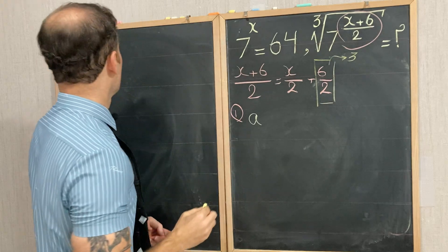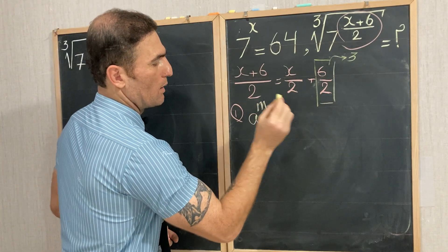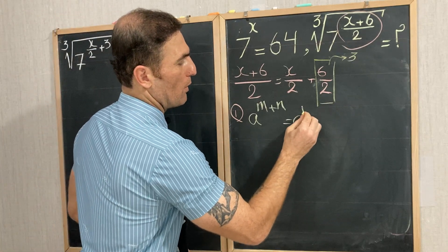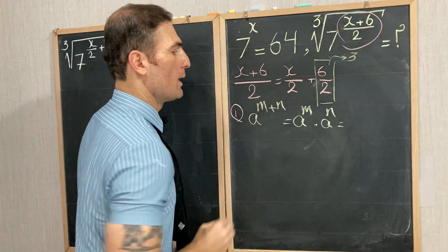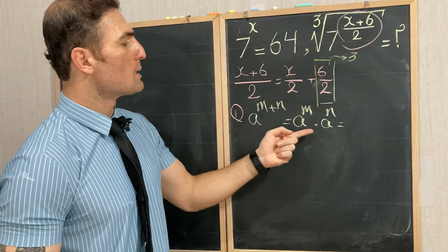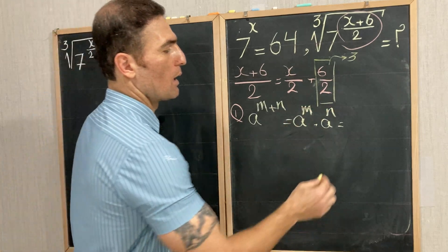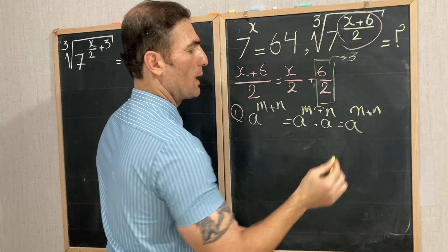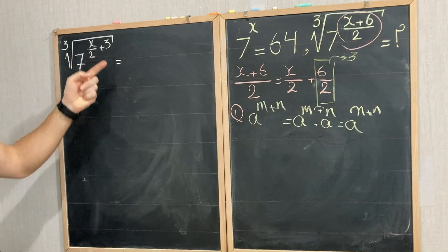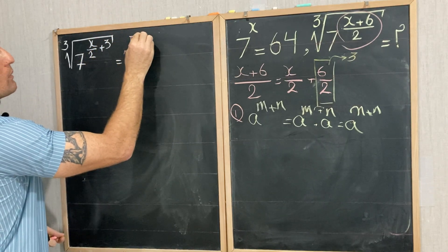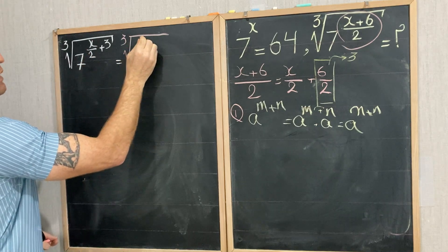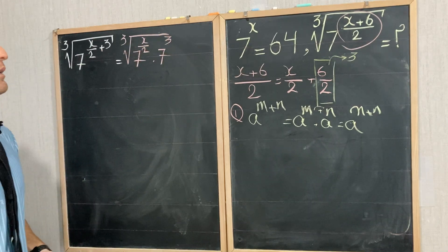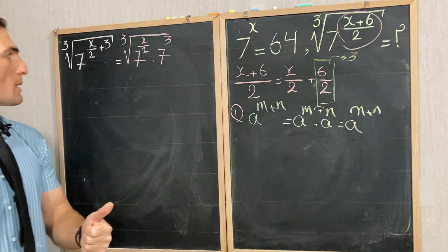Remember the exponent rule: a to the power of m plus n equals a to the power of m times a to the power of n. When we have a multiplication with the same base but different powers, we write the base and add the exponents. Now we work backwards: 7 to the power of x over 2 plus 3 becomes the cube root of 7 to the power of x over 2 times 7 to the power of 3.